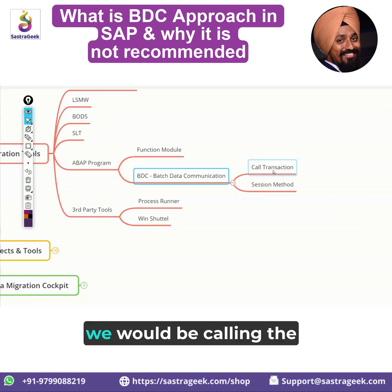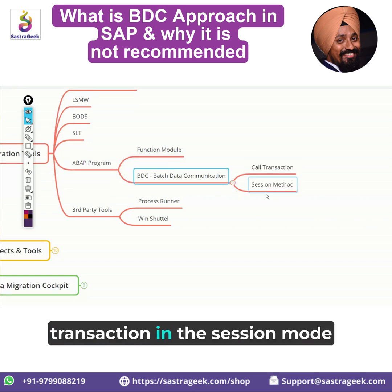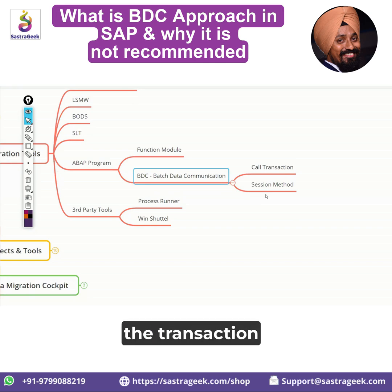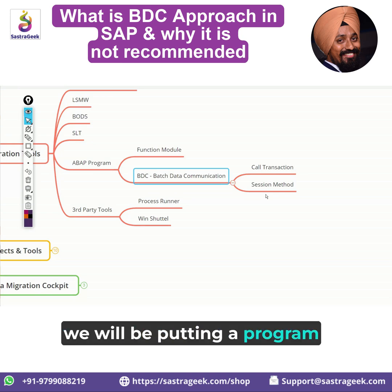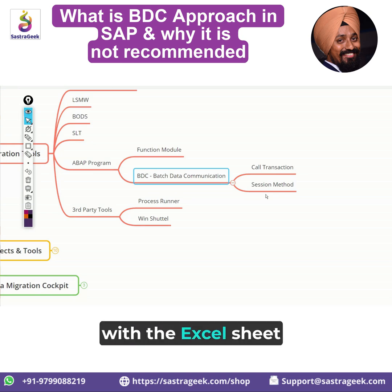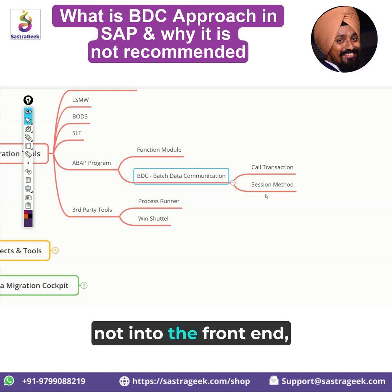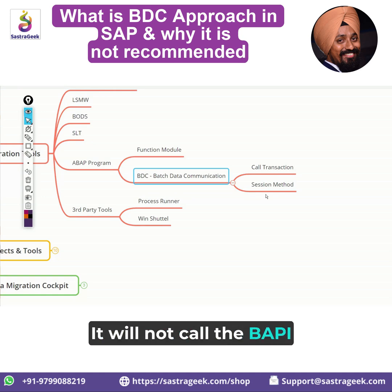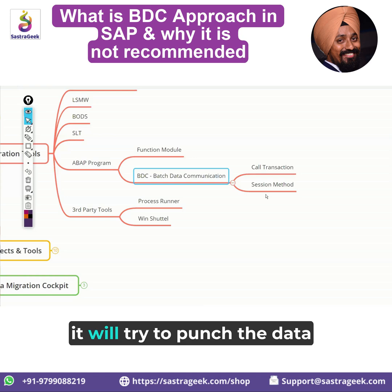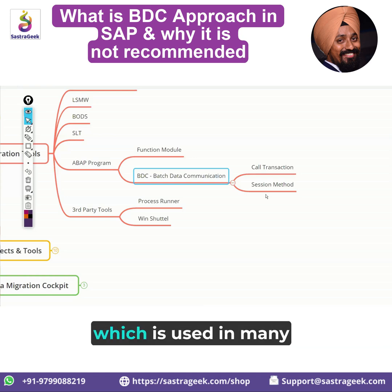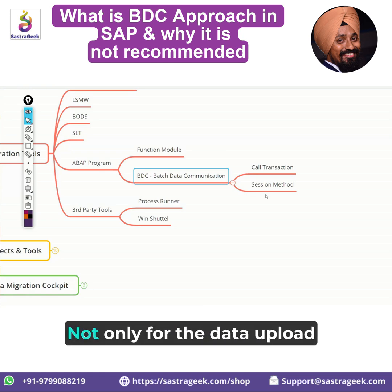With the BDC approach, we would be calling the transaction in session mode and recording the transaction. With that recording, a program would be created, and with an Excel sheet we will be passing the data. In the mass it will call that transaction — not into the front end but into the back end. It will not call the BAPI or function module; it will call the transaction, and with the transaction called it will try to punch the data. It's one of the easiest approaches used in many projects.